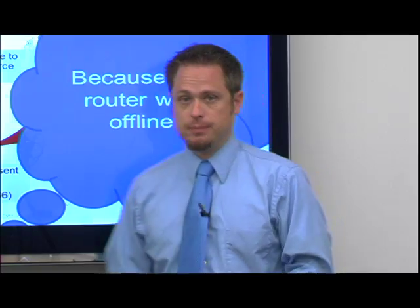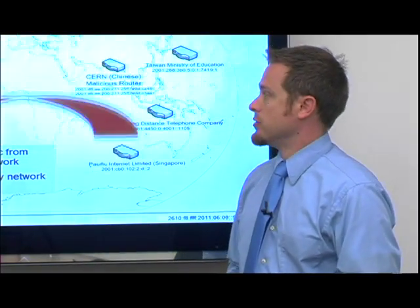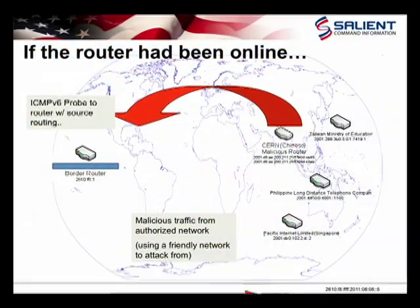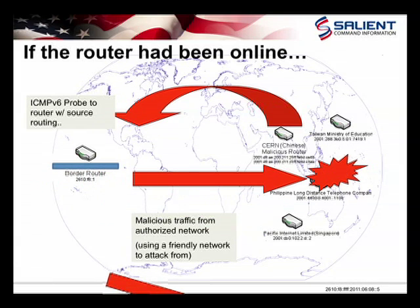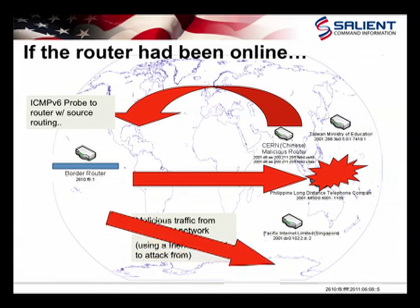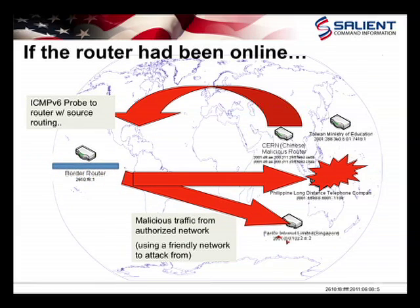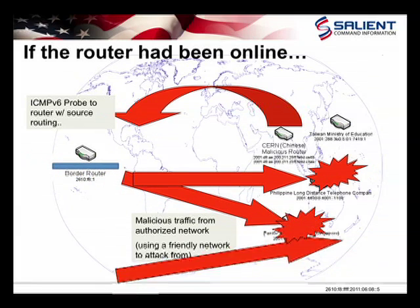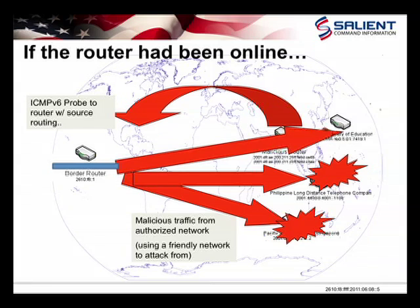Had it been online, we would have seen a scenario where those ICMPv6 probes with the source routing, combined with the botnet traffic, would have been hitting a lot of specific networks out in the far east, using our network as a kind of hop-off point.